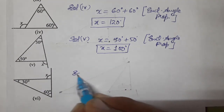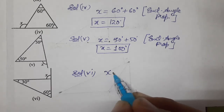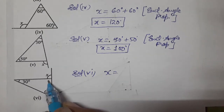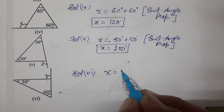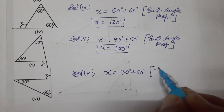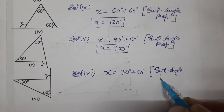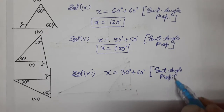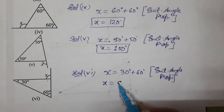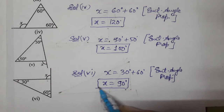For the last part, the exterior angle X equals the sum of its interior opposite angles, which are 30° and 60°. The reason is the same — exterior angle property. So X equals 60 plus 30, which is 90°. This completes question number one. I hope you understood. Thank you so much for watching the video.